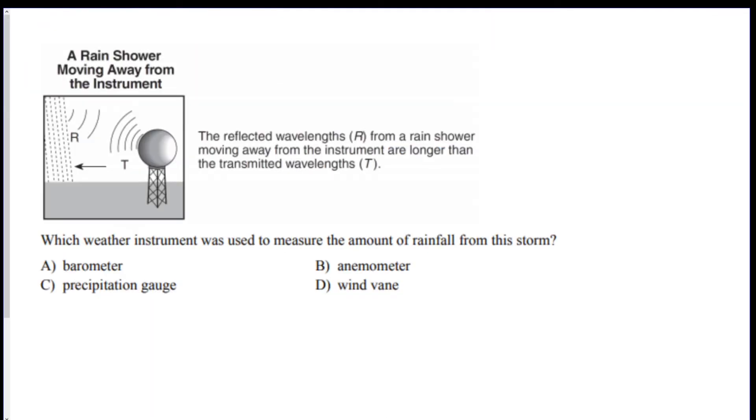So let's do a couple practice questions and see what you do. Number one. Which weather instrument was used to measure the amount of rainfall from a storm? You have four instruments. Barometer, that measures pressure. That's not the answer. Anemometer measures wind speed. That's not the answer. Wind vane is wind direction. So amount of rainfall is your precipitation or rain gauge. That's the answer, C.